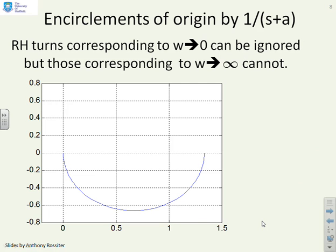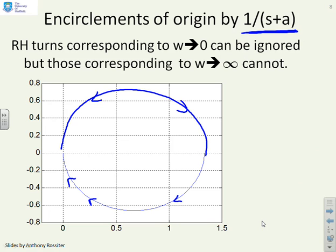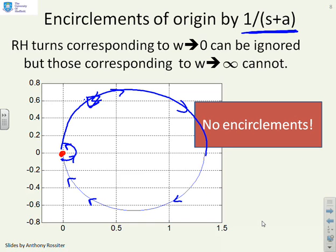What about a factor 1 over S plus A? We've plotted the mapping here and added the arrows. Now I need to complete my Nyquist diagram. I'll use the right-hand turns to do the bit at the origin, exaggerating it a bit so you can see what's happening. If I mark the origin with a red dot, then clearly it's not inside — it's outside this locus. And therefore, you have no encirclements.